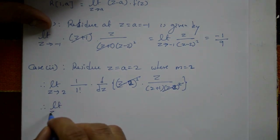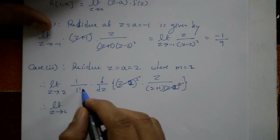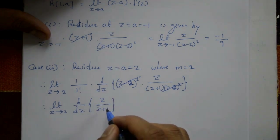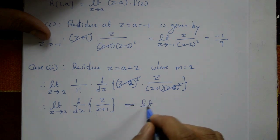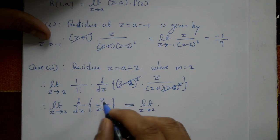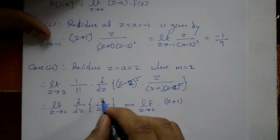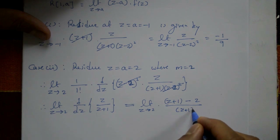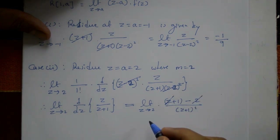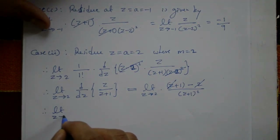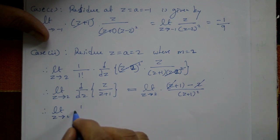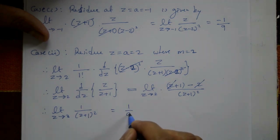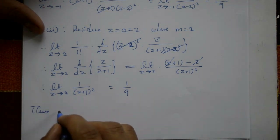Now applying the quotient rule to d/dz [z / (z+1)]: using the u/v form, numerator = (z+1)(1) - z(1) = z+1-z = 1, divided by (z+1)². So the derivative is 1/(z+1)². Therefore: limit as z → 2 of 1/(z+1)² = 1/(2+1)² = 1/9. The residue at z = 2 is 1/9.